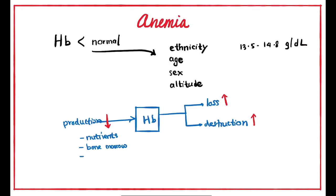The most common loss of hemoglobin involves the RBC. The hormone responsible is erythropoietin. The kidney function produces this hormone, and if the kidneys are impaired, it is called renal disease, which affects erythropoietin production.